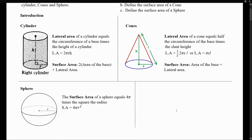Let's start by analyzing a cylinder. Here we have a cylinder on the left, and we're going to define the lateral area. The lateral area of a cylinder is equivalent to the circumference of the base times the height of the cylinder. So given a cylinder, if we find the circumference of the base and multiply it by the height, that's the lateral area.